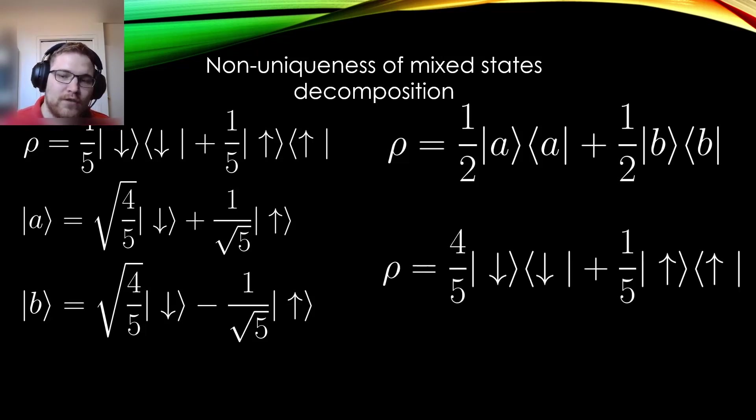Therefore, two different ensembles of pure states can give rise to the same mixed state. Then, we must be careful when we interpret PJ as strictly probabilities of a particular system being strictly in its associated pure state in the sum.